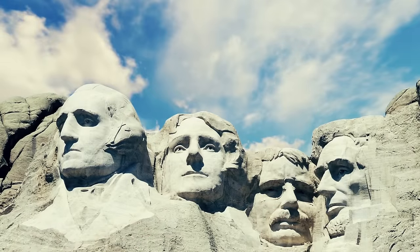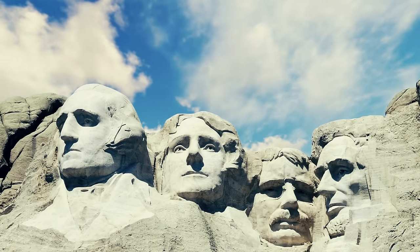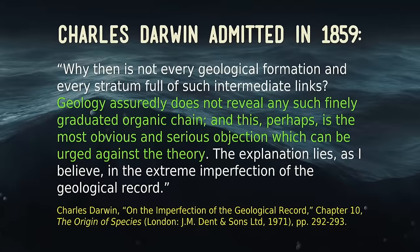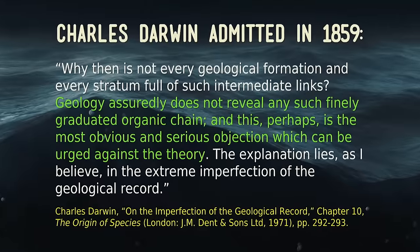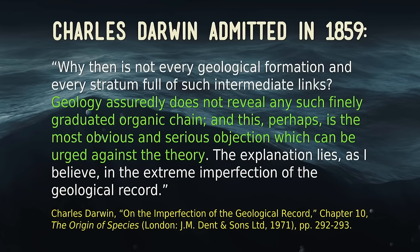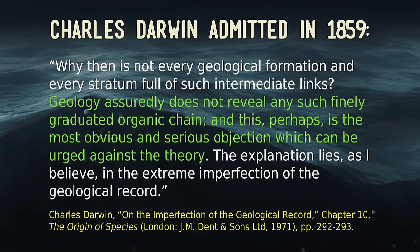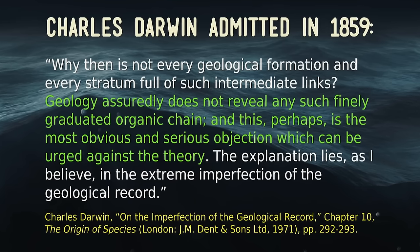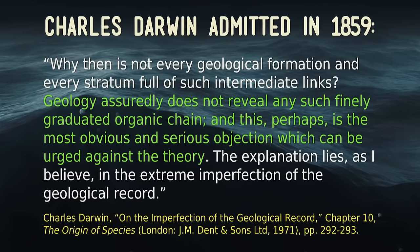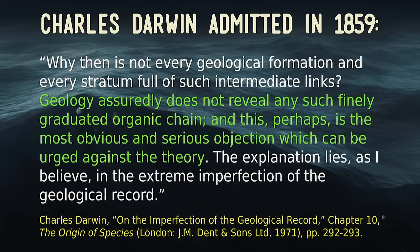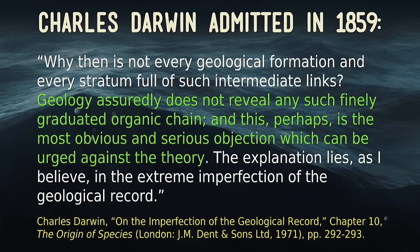Charles Darwin wrote in 1859: 'Why then is not every geological formation and every stratum full of such intermediate links? Geology assuredly does not reveal any such finely graduated organic chain, and this perhaps is the most obvious and serious objection which can be urged against the theory.' He realized there were none of these missing links. His explanation? 'The explanation lies, as I believe, in the extreme imperfection of the geologic record.'